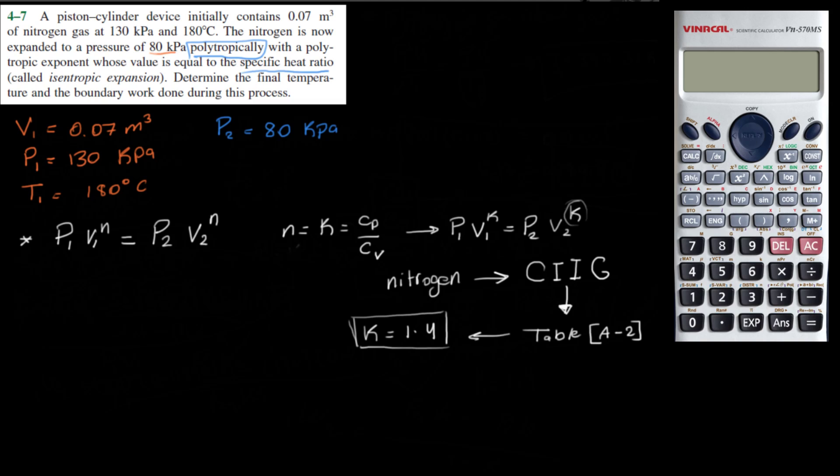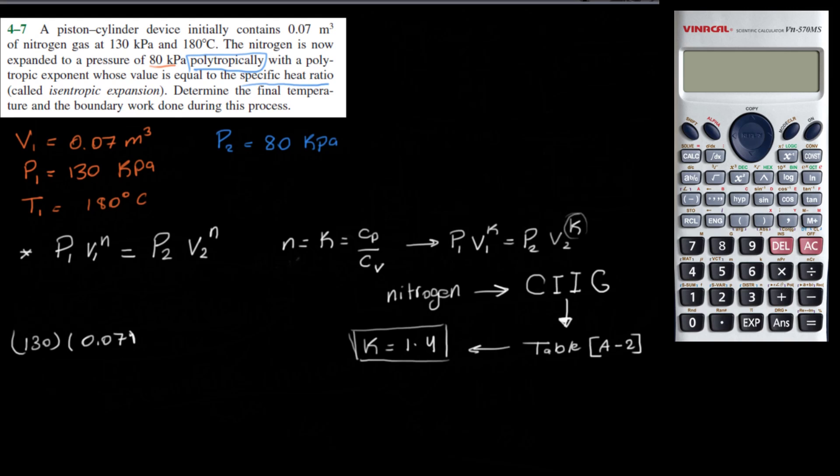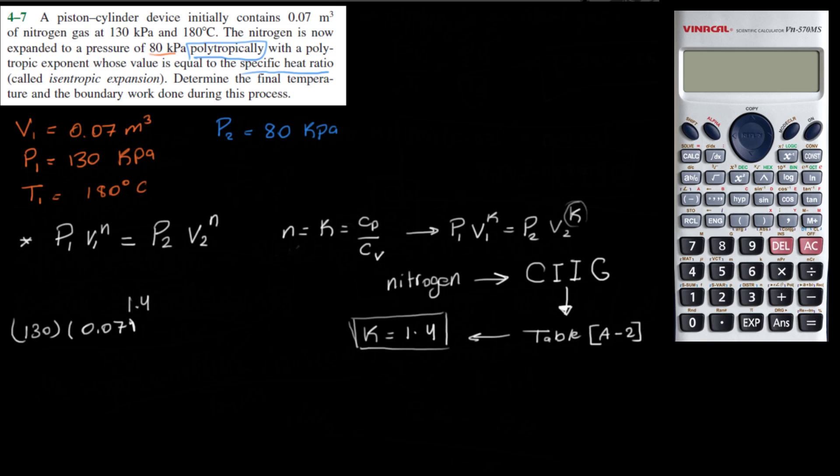So again, if we were to write this equation: P1, we already have P1 which is 130 kilopascals, we have V1 which is 0.07 to the 1.4 is equal to 80 kilopascals V2, we don't know V2 to the 1.4. So here is the equation. Now let's continue reading the question before we get any more into these details.